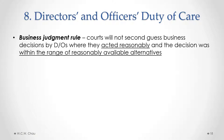In applying this duty of care, courts have clearly said they will not second-guess the business decisions of directors and officers where they have acted reasonably and the decision was within the range of reasonably available alternatives. This is called the business judgment rule. It means we don't expect directors and officers to have a crystal ball and be perfect, but only to act reasonably and make a decision within the range of reasonably available alternatives.